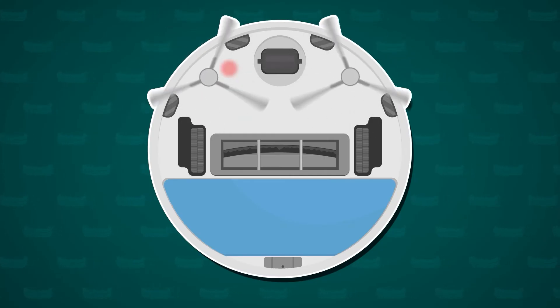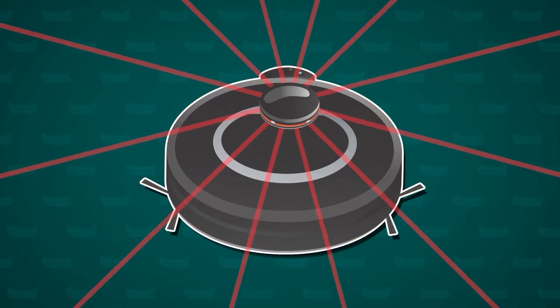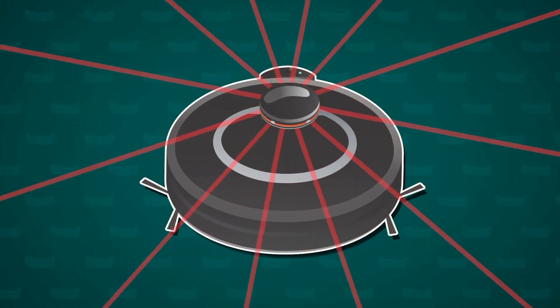The first thing to know is that the robot vacuum has multiple sensors. These are like its eyes and ears, helping it to see obstacles and feel its way around. Some even use lasers to map out the room in real time.